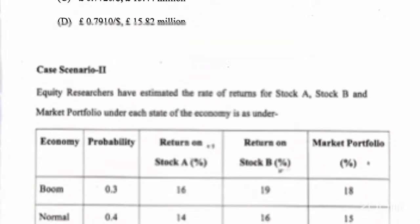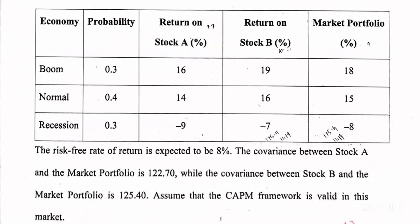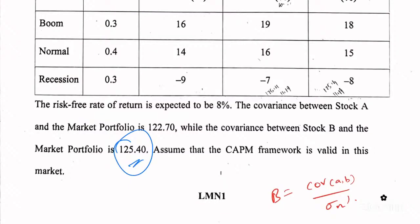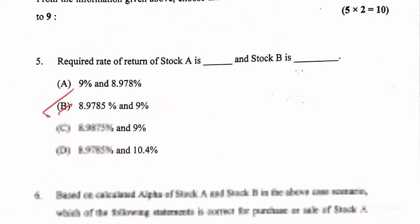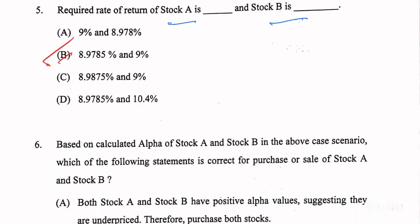Then come to case scenario two. In case scenario two, you have to first figure out the market covariance — and in fact, market variance will also be the same as 125.4. Only after you figure that out will you be able to answer other questions. Beta equals covariance divided by market variance. So for question five, you'll get 8.9785 and 9% as required returns of A and B. The answer is B.